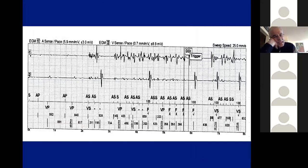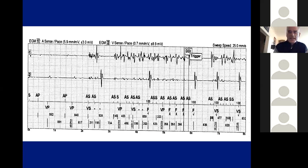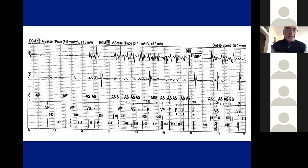Here is another example of noise. This is a dual-chamber electrogram — atrial channel on top, ventricular sense channel, and markers. What kind of noise is this? It's likely EMI — electromagnetic interference — because you see it on both channels. If you saw it on only one lead, you'd suspect something wrong with that lead. But if it's on both leads simultaneously, the chances that both leads failed at the same time is much less.